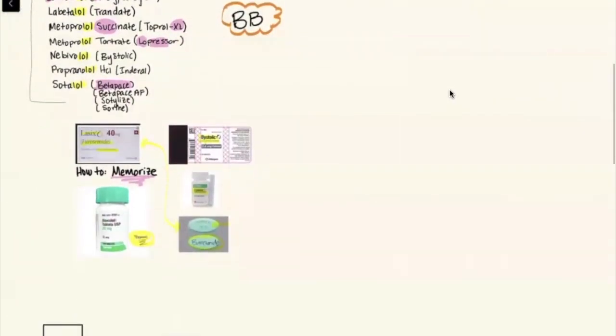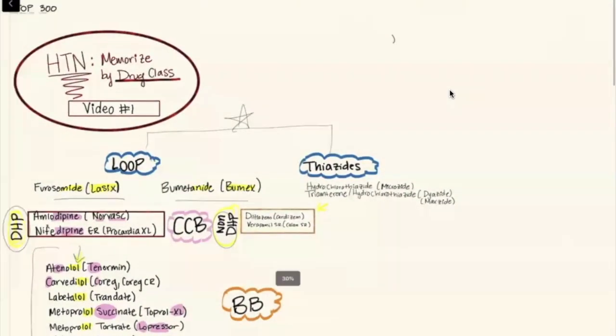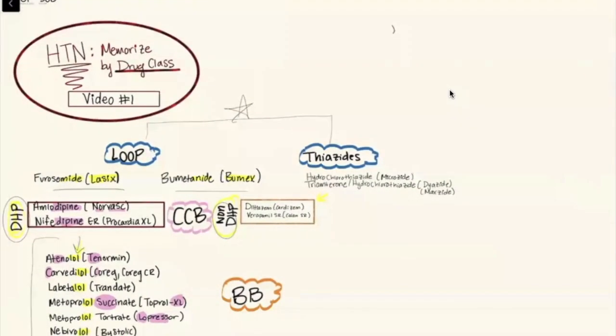And then here I just kind of have this other memory trick that we already discussed, which is looking through Google images so I can throw those in there to test myself. So that's another method I like to use, which is just grouping drugs first by indication, then within indication by drug class, and within the drug class you'll list your generic brand names. You can even use some color coding like I did here to remind myself of important things about each of these ones.